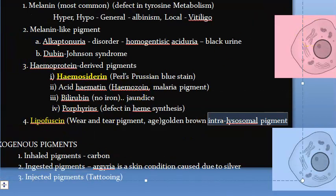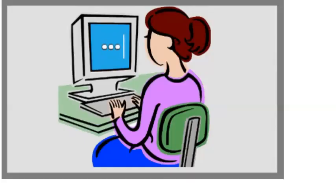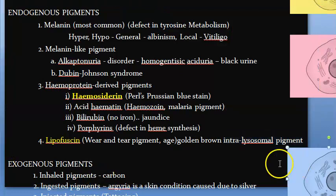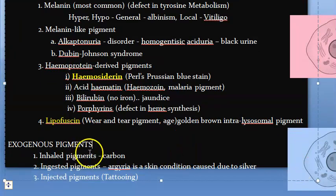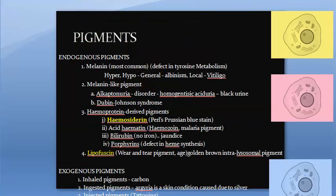So to summarize, the endogenous pigments are: melanin, melanin-like pigments, heme protein-derived pigments (hemosiderin, hemozoin), bilirubin, porphyrins, and lipofuscin. For exogenous pigments, you have inhaled pigments like carbon, ingested pigments like silver, injected pigments, and tattoo pigments such as India ink or henna.